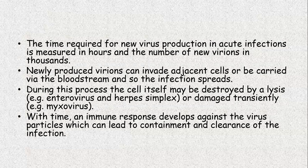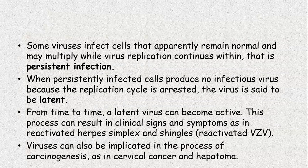With time, an immune response develops against a virus particle, which can lead to containment and clearance of the infection. Some viruses infect cells that apparently remain normal and may multiply while virus replication continues within it — that is called as the persistent infection. That is, the cells are multiplying and virions are replicating as well. When persistently infected cells produce no infectious virus because the replication cycle is arrested, the virus is said to enter the latent stage.